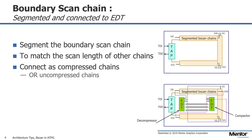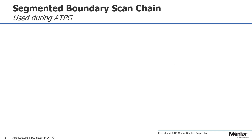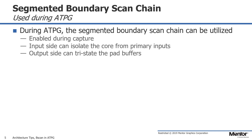Also, these segmented boundary scan chains can be connected as compressed chains between the decompressor and compactor of the test compression hardware. The segmented boundary scan chains can be enabled during ATPG. On the input side, they can isolate the core from primary pins. On the output side, they can tri-state the pad buffers. The segmented boundary scan chains are used effectively during logic tests without contacting all the pins of the device.